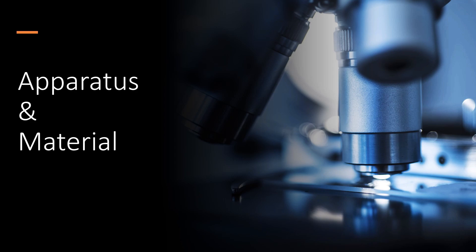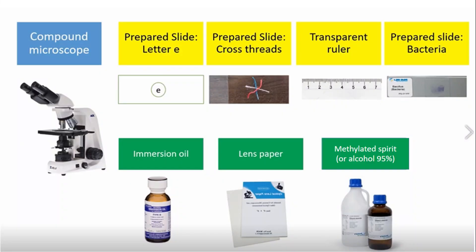For the apparatus and materials needed in experiment 1: one compound microscope, four different sets of prepared slides (letter E, cross thread, transparent ruler, and bacteria), and three materials required for oil immersion technique: immersion oil, lens paper, and alcohol.